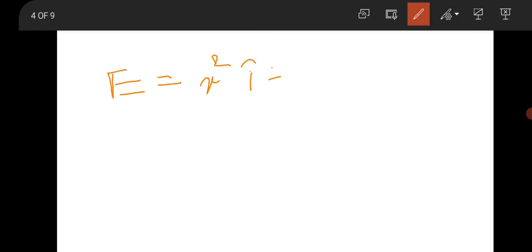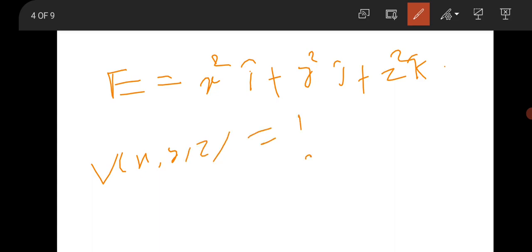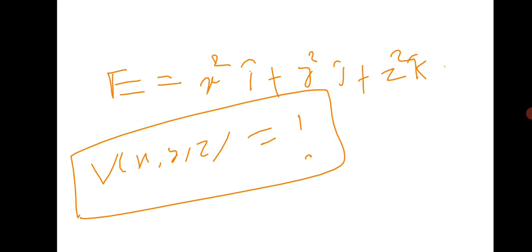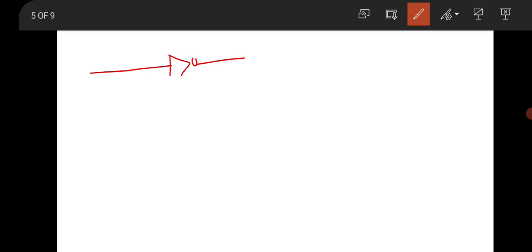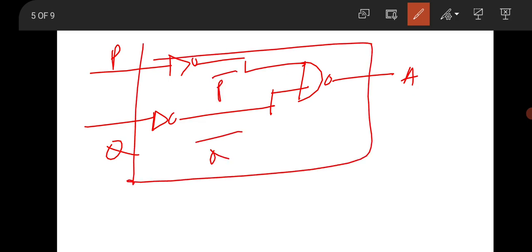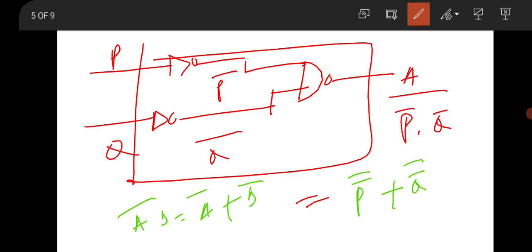An electric field E = x²î + y²ĵ + z²k̂ was given and you had to find the potential V(x,y,z). In digital electronics, a NOT gate and a NAND gate arrangement with inputs P and Q was given. The output box gives P̄·Q̄ (whole bar), and applying De Morgan's theorem (Ā·B̄ = Ā + B̄) gives P + Q — so it behaves as an OR gate.